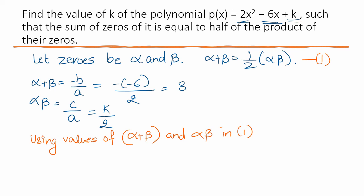So, what do we know: alpha plus beta is 3. So, left hand side is 3. Right hand side is half of k/2. So, multiply: k/2 multiplied by half is k/4 equals 3, which implies k equals 12.